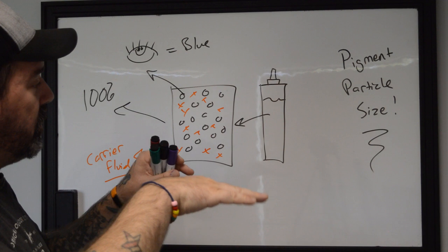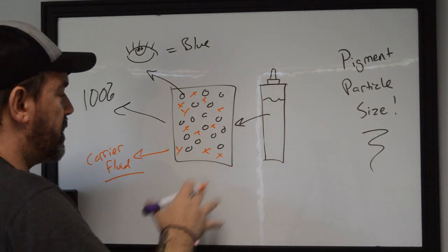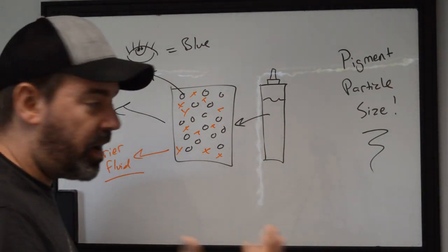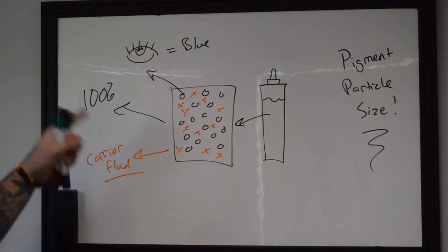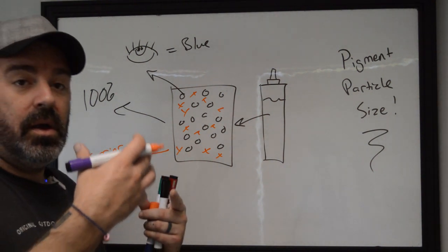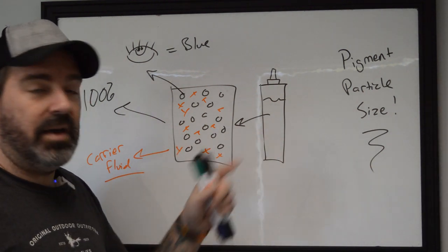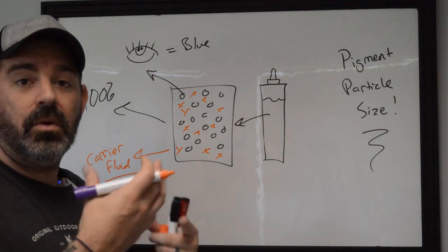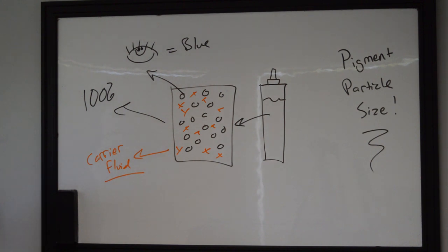When you start balancing these things out, when you have a sliding scale of 100% pigment to 0% carrier fluid, you end up with something that's very dry. When you end up with something that is 95% carrier fluid and only 10% pigment, you have a solution that still may look relatively bold in a bottle, but when you actually look at it under a microscope, there isn't a whole lot of particles of pigment in there. They start to decrease based on that concentration.